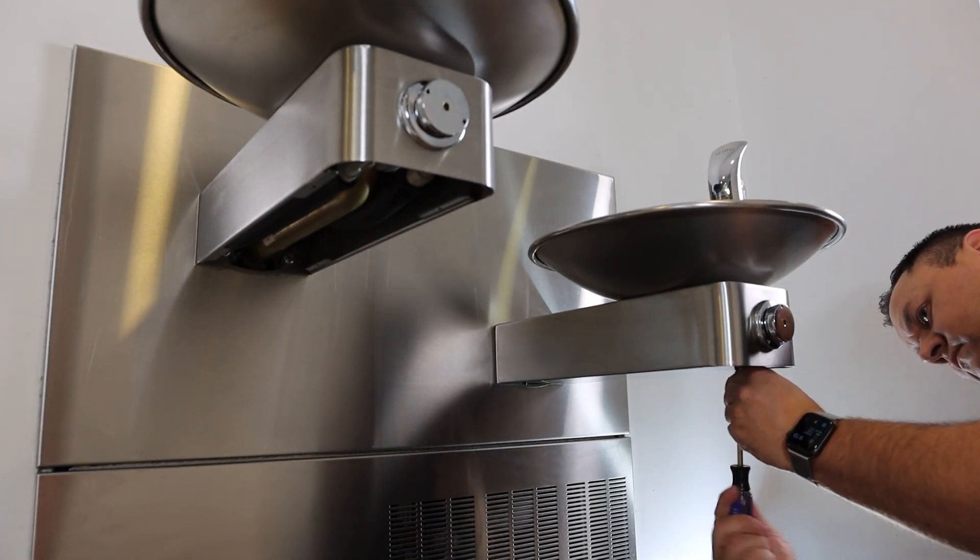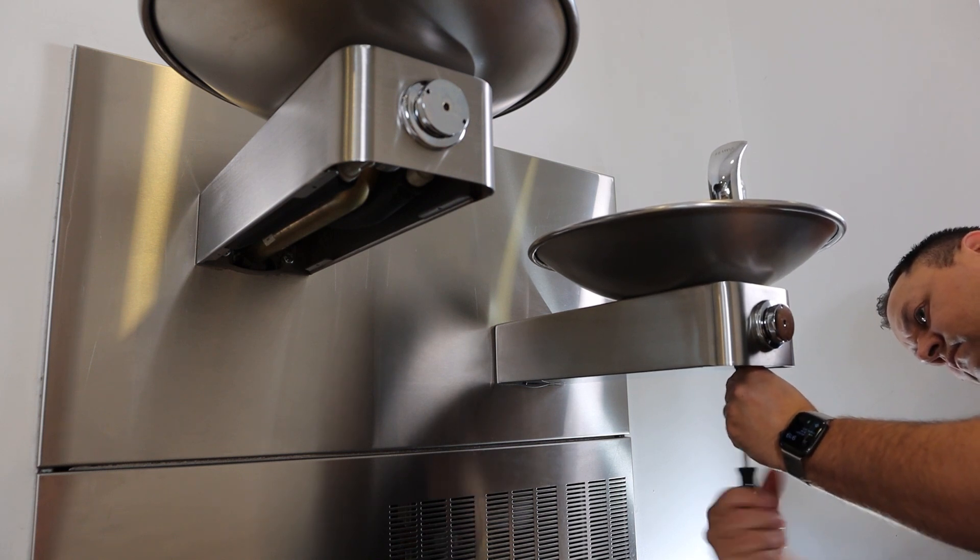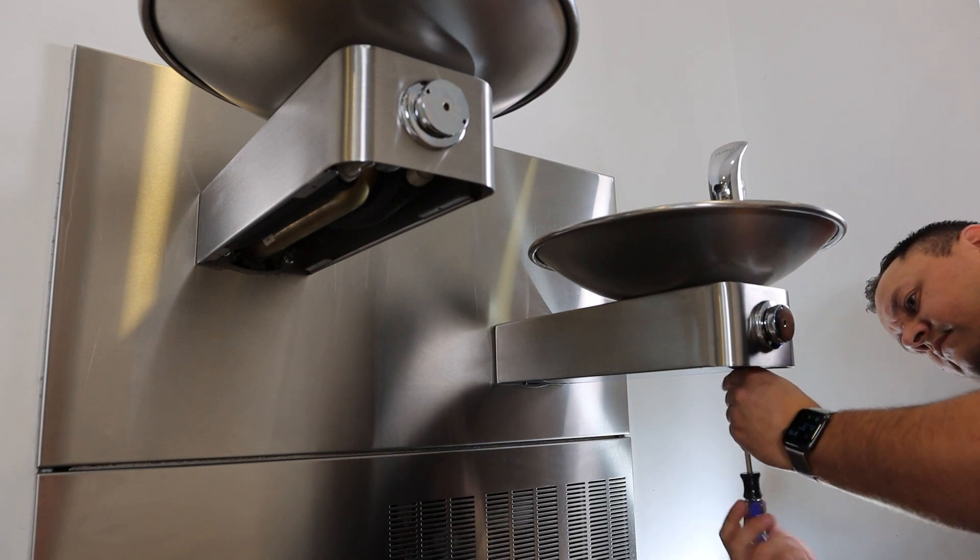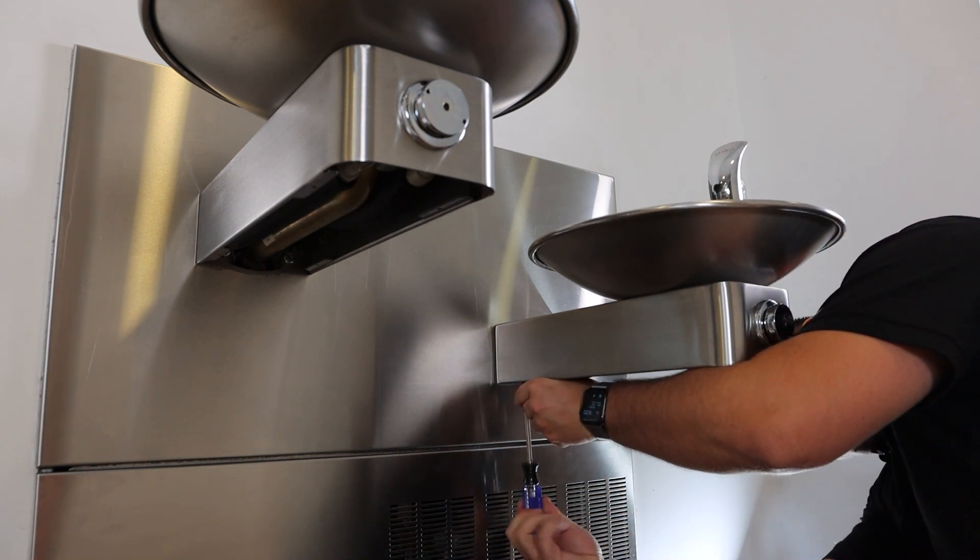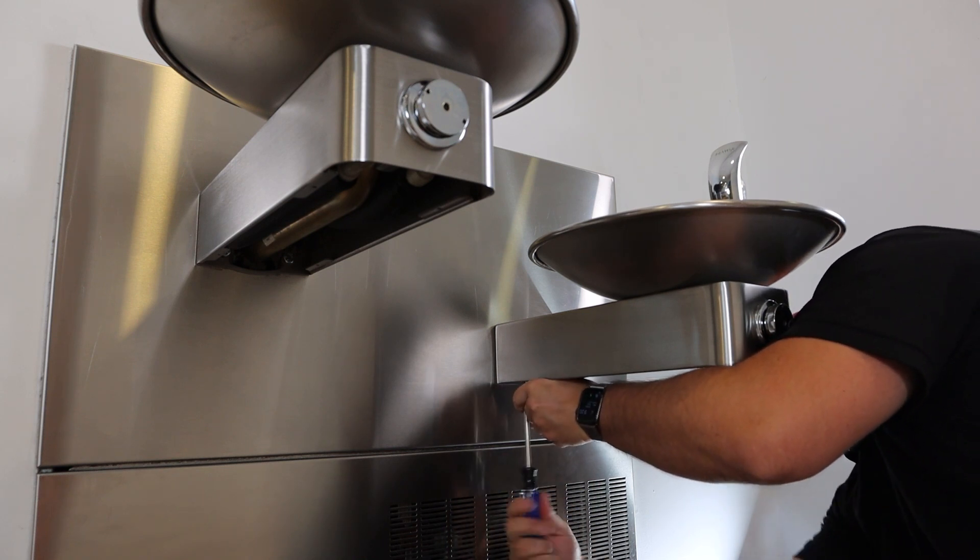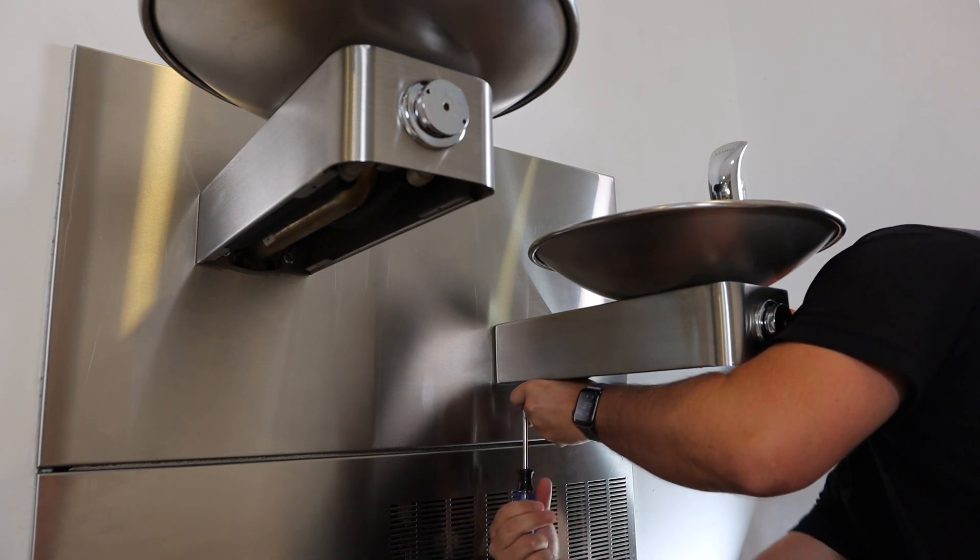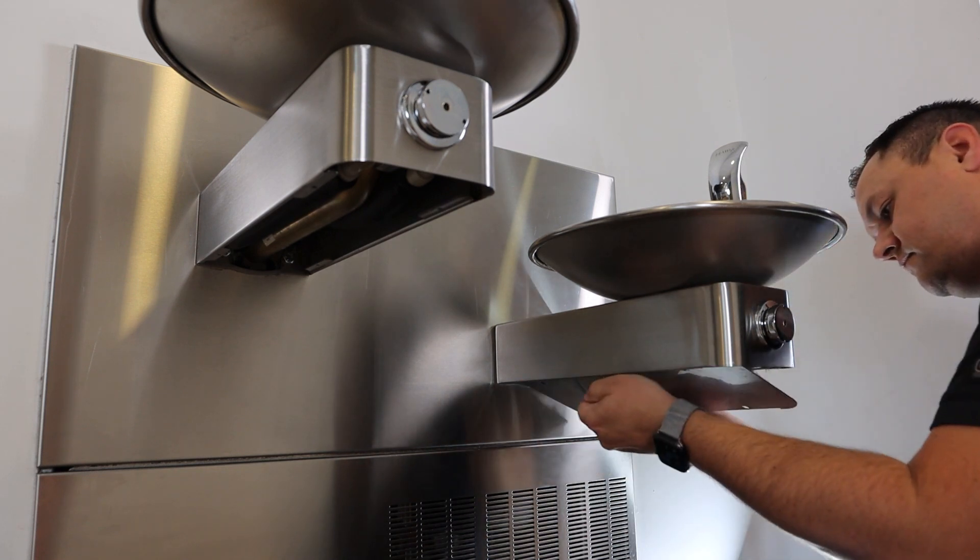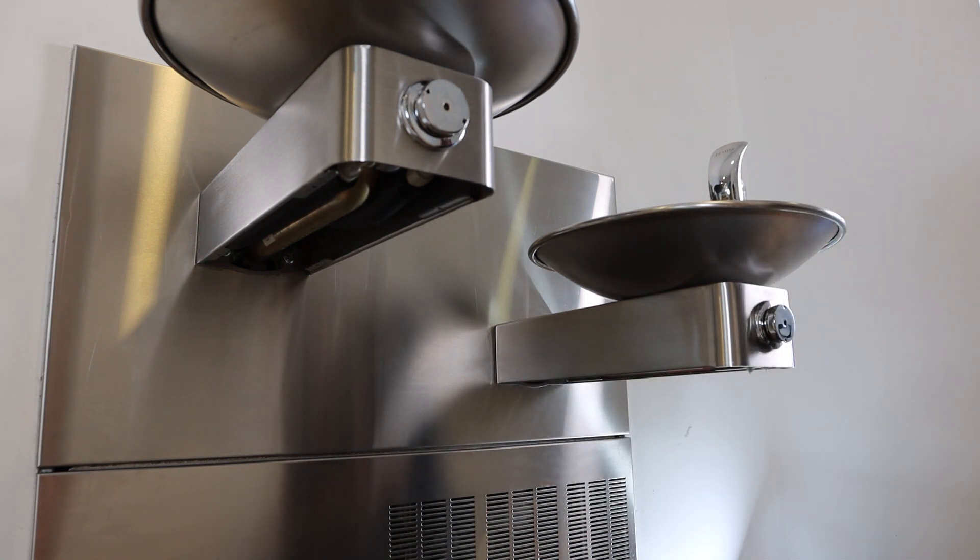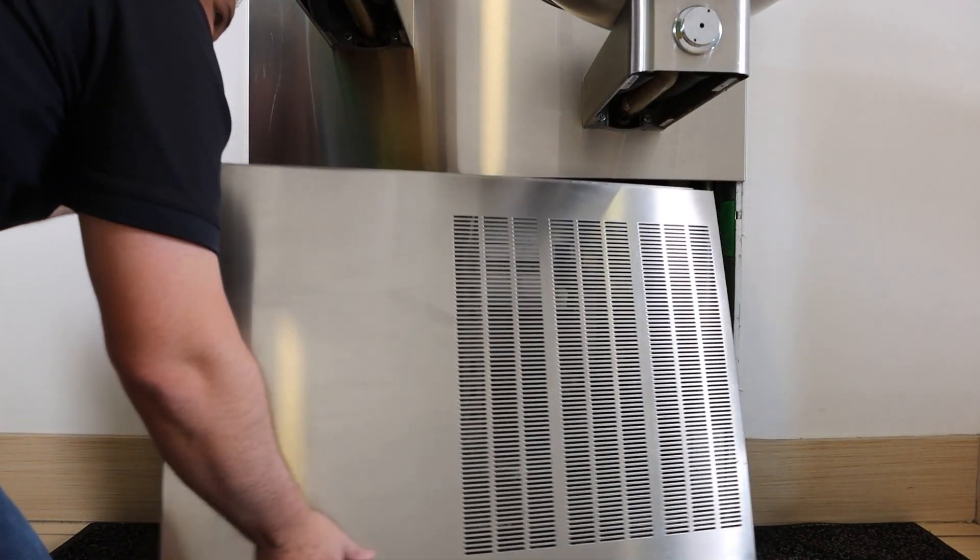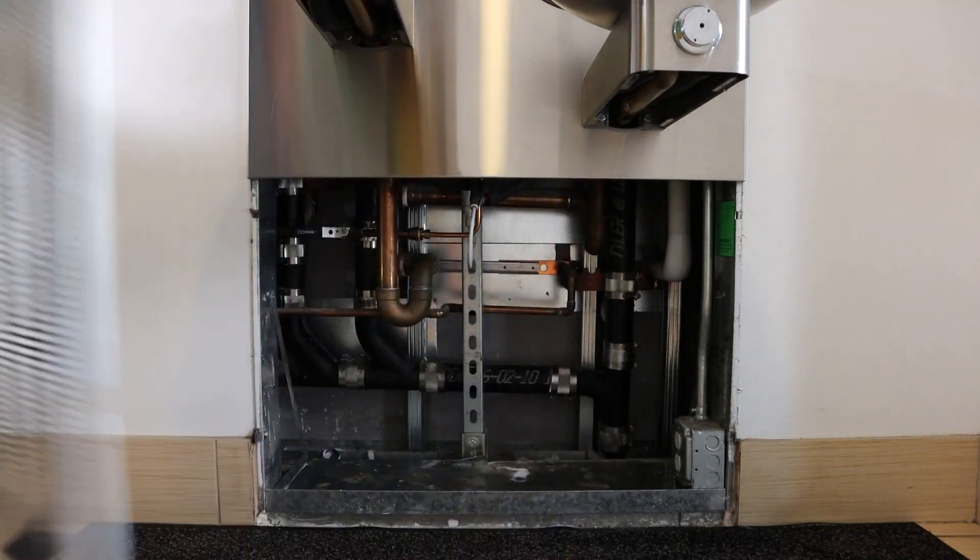Remove the access plate underneath the fountain exposing the supply and drain lines. Follow this by removing the louvered access panel below the fountain or similar access plate if one is installed.